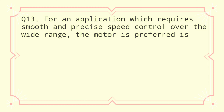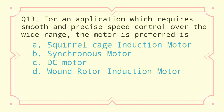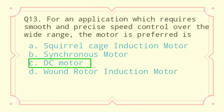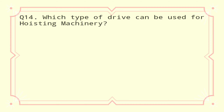Question 13: For an application which requires smooth and precise speed control over a wide range, the motor preferred is: a) squirrel cage induction motor, b) synchronous motor, c) DC motor, d) wound rotor induction motor. The correct answer is DC motor.